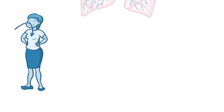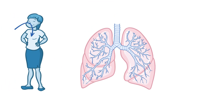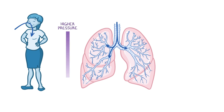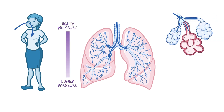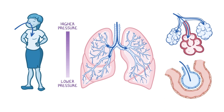When we breathe, air moves between the atmosphere and the alveoli inside the lungs. This movement of air is driven by the pressure difference between the two sites, where air flows from an area of higher pressure to an area of lower pressure. The journey of air within airways is not easy, though, due to the presence of airway resistance.